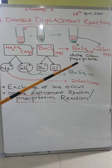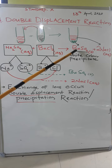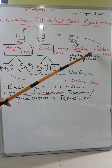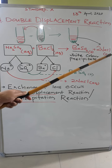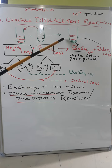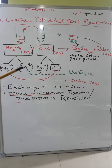That white color precipitate at the bottom is barium sulfate (BaSO4), written as solid, plus two NaCl. The NaCl remains dissolved in the water.